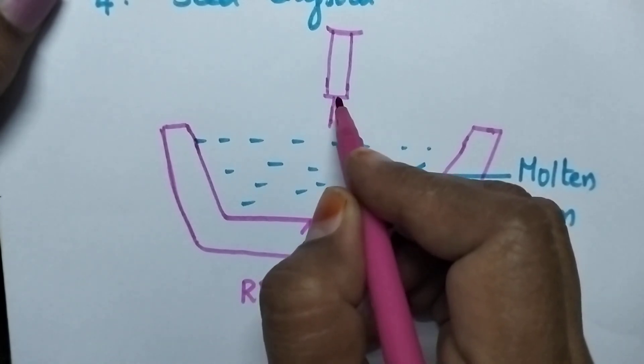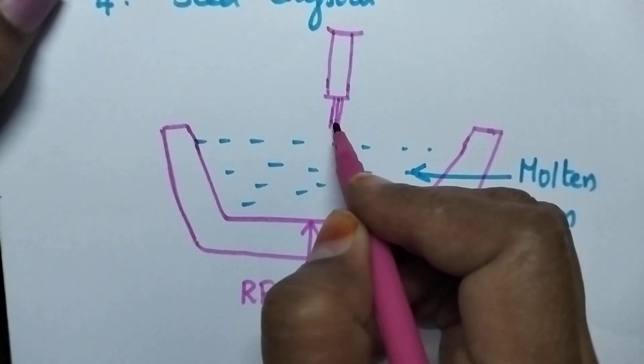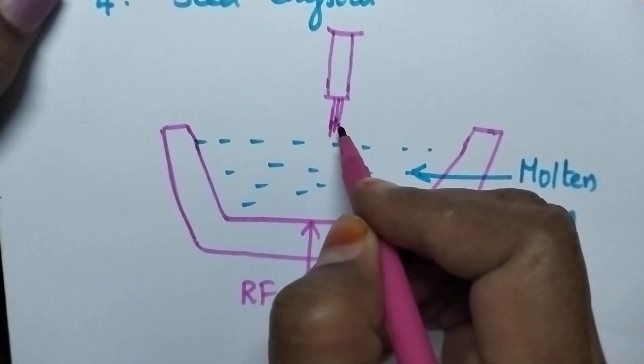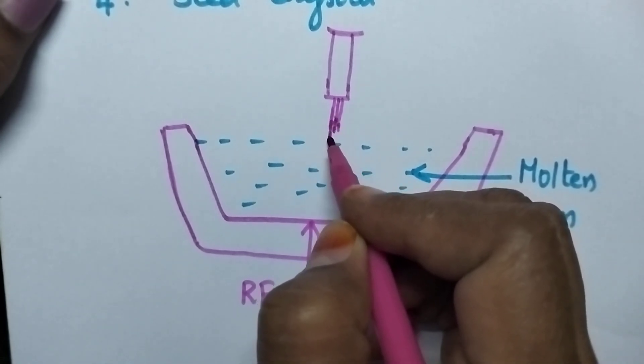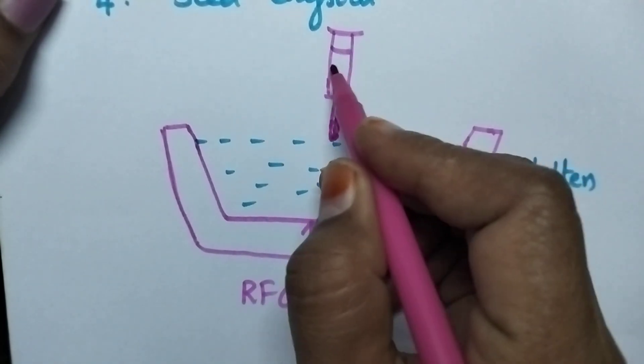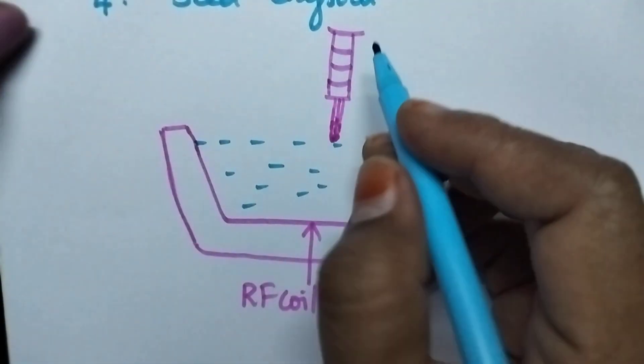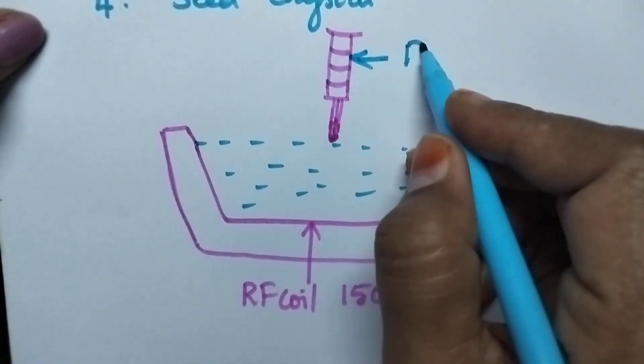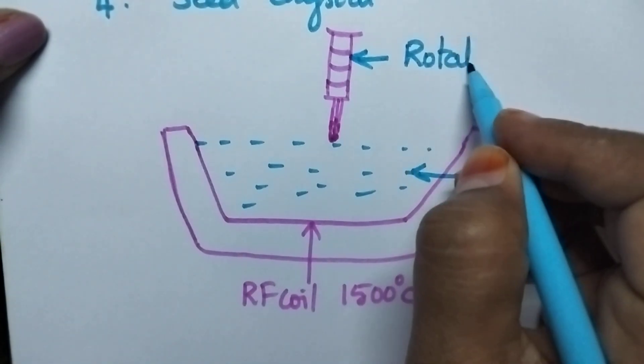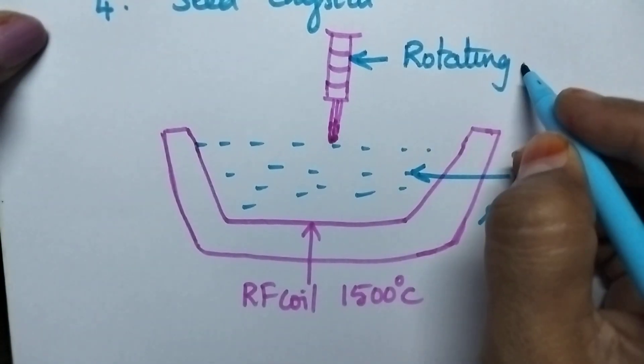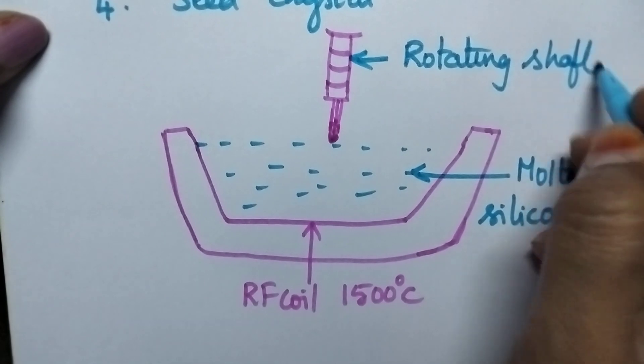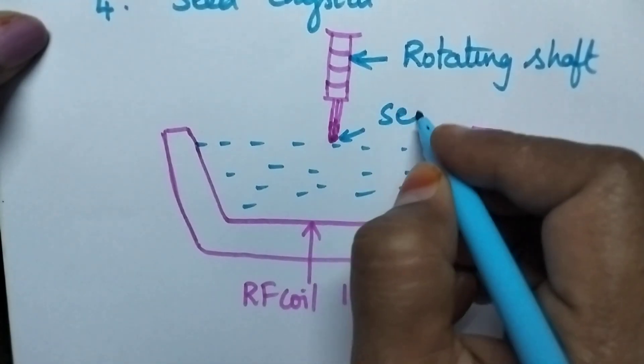And it is always supported with the seed crystal. This is the rotating shaft, and this is the seed crystal.